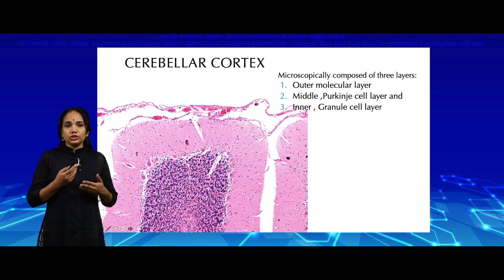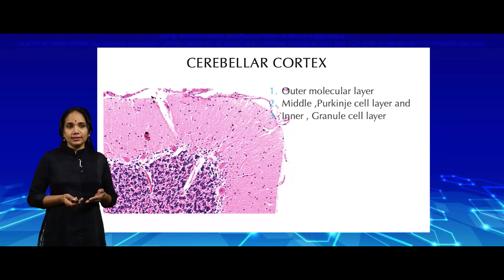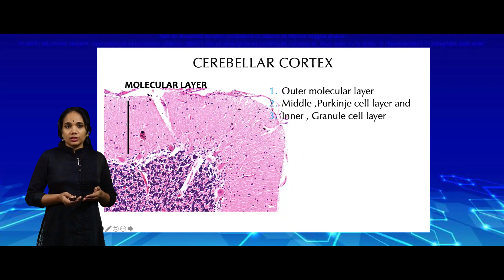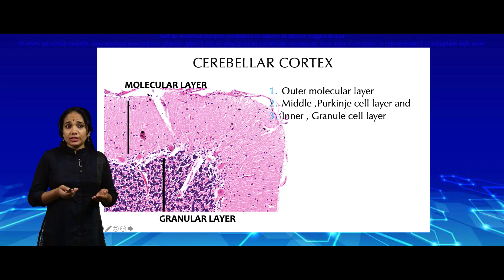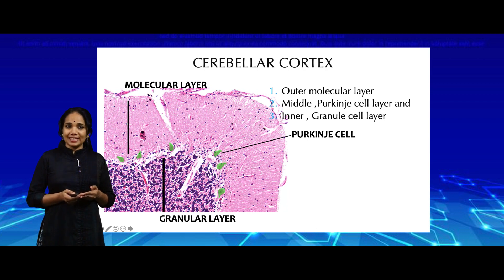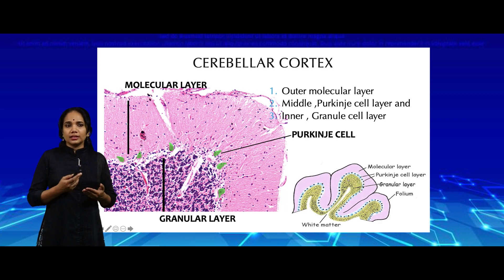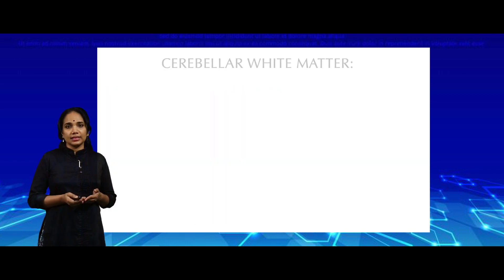Zooming in, this is the outer molecular layer, which is slightly less cellular compared to the inner granular layer, which has a very prominent nuclear layer. In between, you can see these special basket-shaped cells called Purkinje cells, which form the intermediate or Purkinje cell layer. This is a simple representation of the different layers of the cerebellar cortex, though it cannot be used in a histology setting.